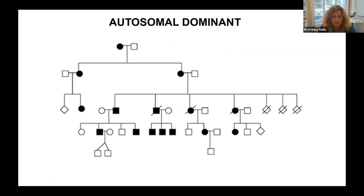Some patients do not have a mutation in TTR — the normal TTR protein can be deposited later in life, particularly in the heart. But today I'm really going to focus on the genetic form because that is the commonest form to cause a neuropathy.